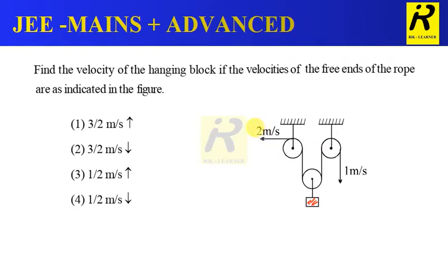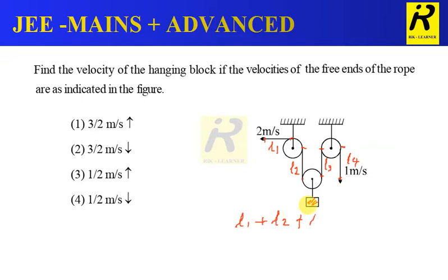The velocities of the free ends of the ropes are given as 2 meters per second and 1 meter per second, left and right respectively. For the first method, I choose the length from one end as L1, from there to the next section as L2, then L3, and then L4. If I add all those lengths together — L1 plus L2 plus L3 plus L4 — this sum becomes a constant because it is a single rope.